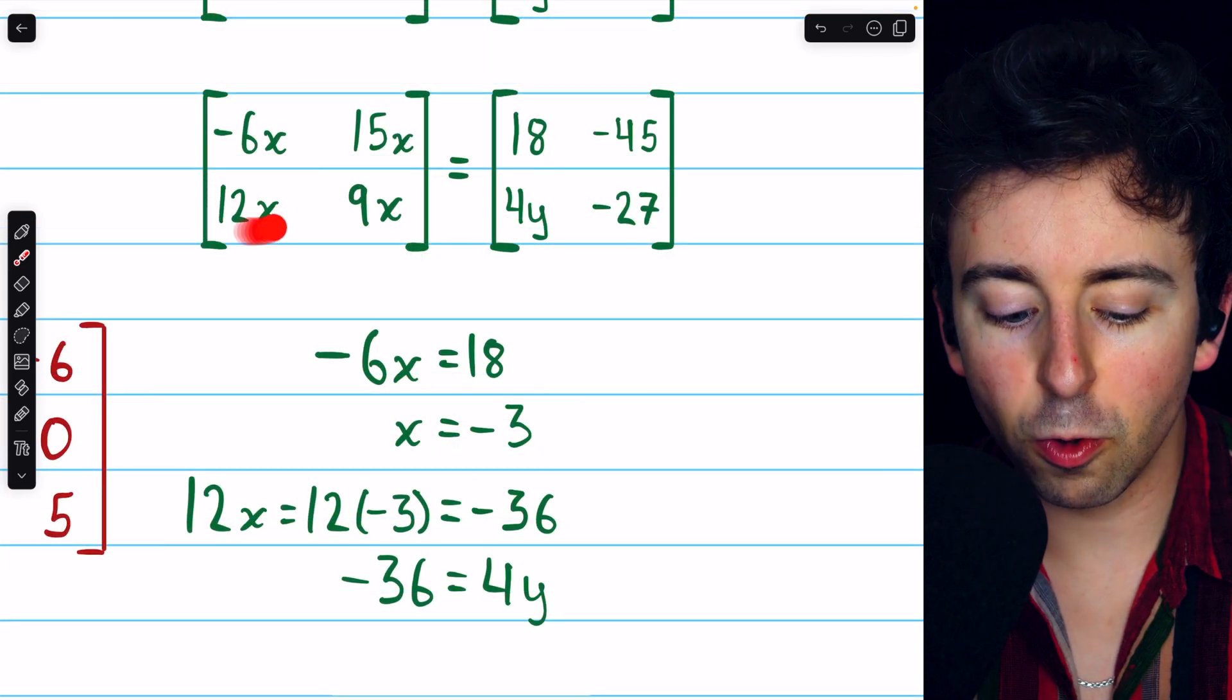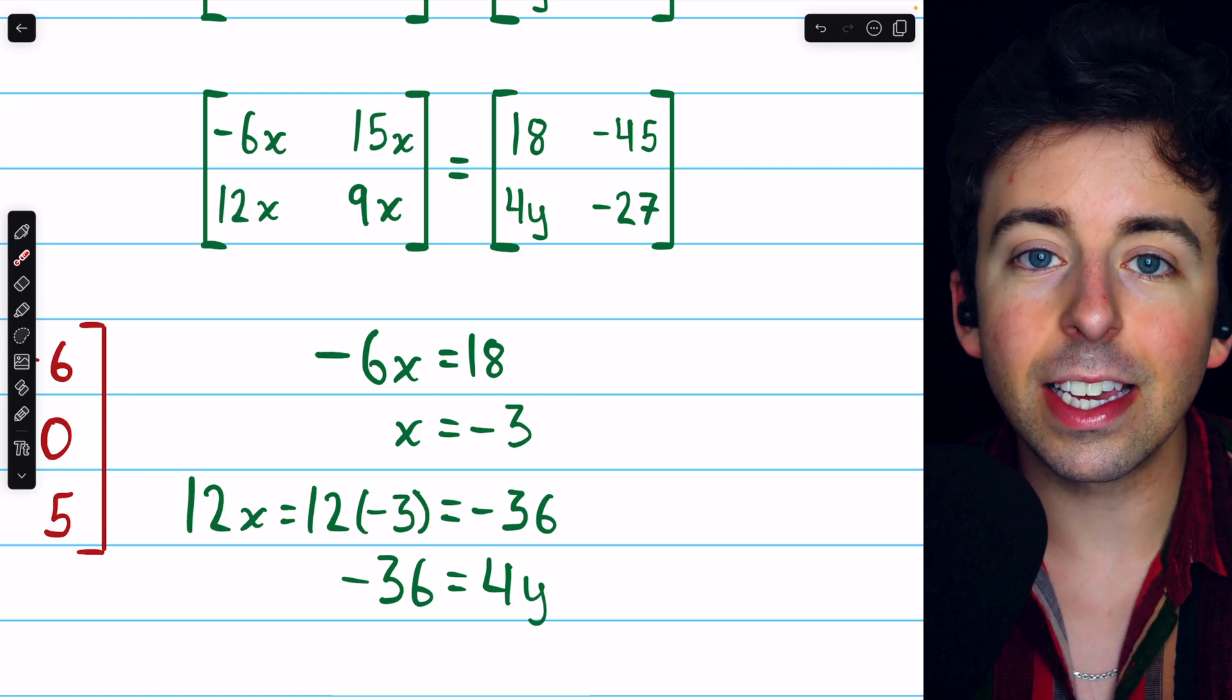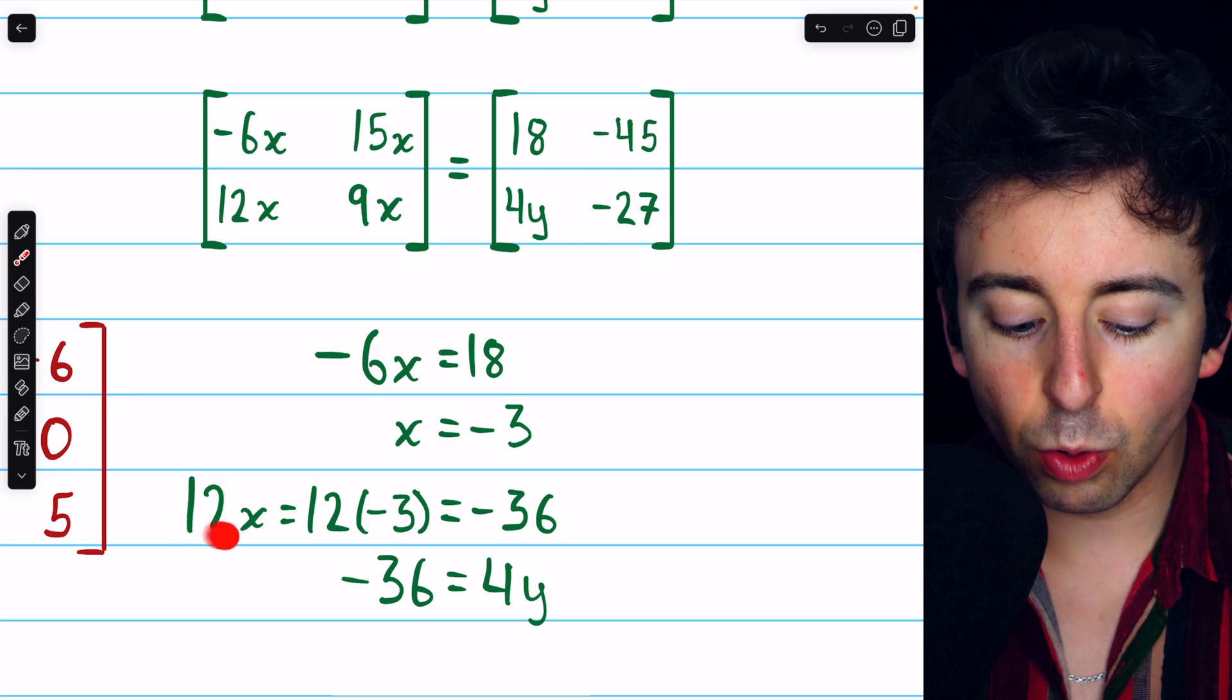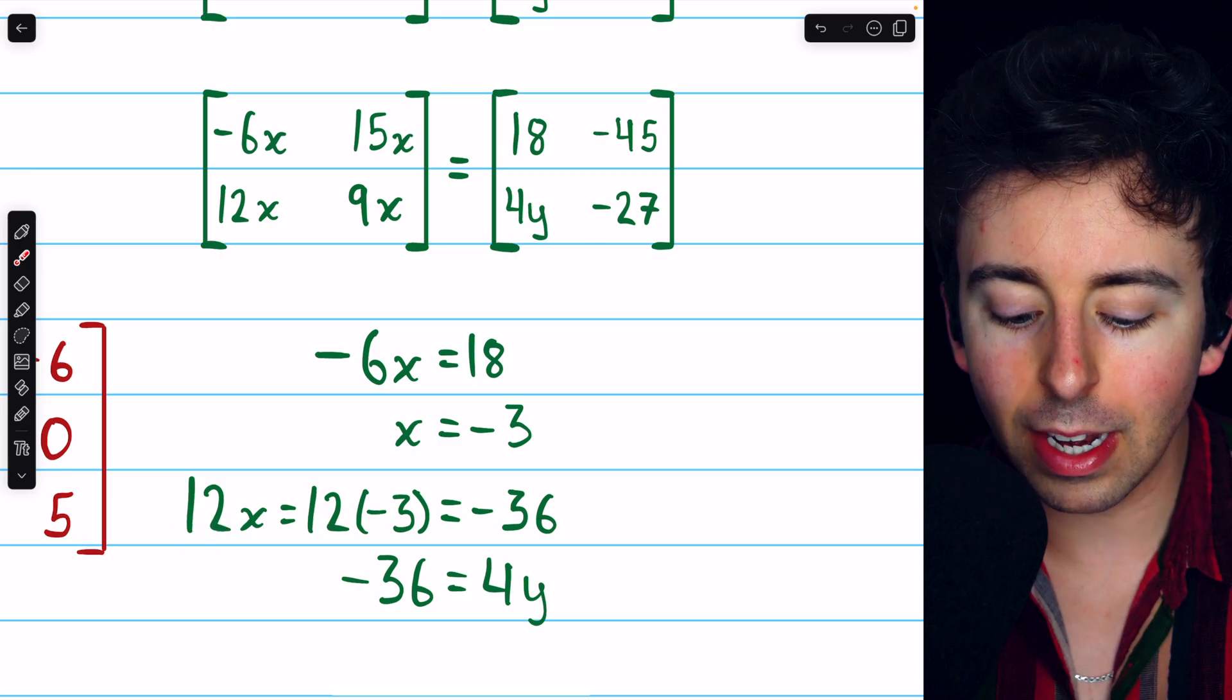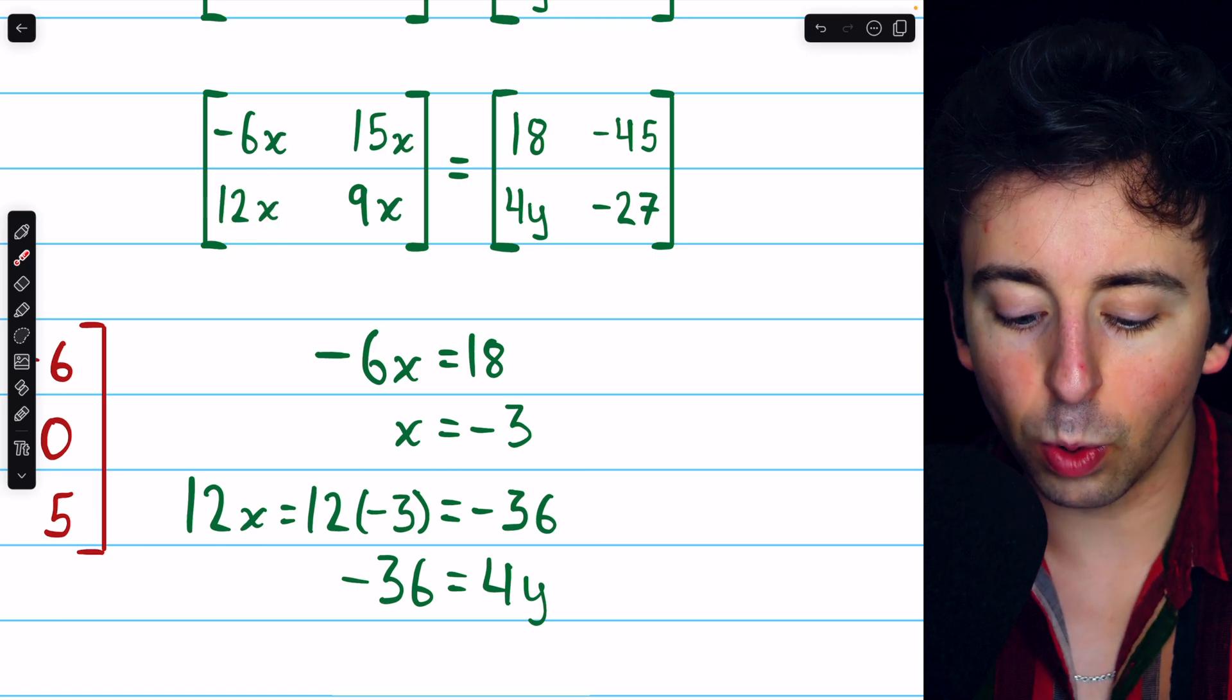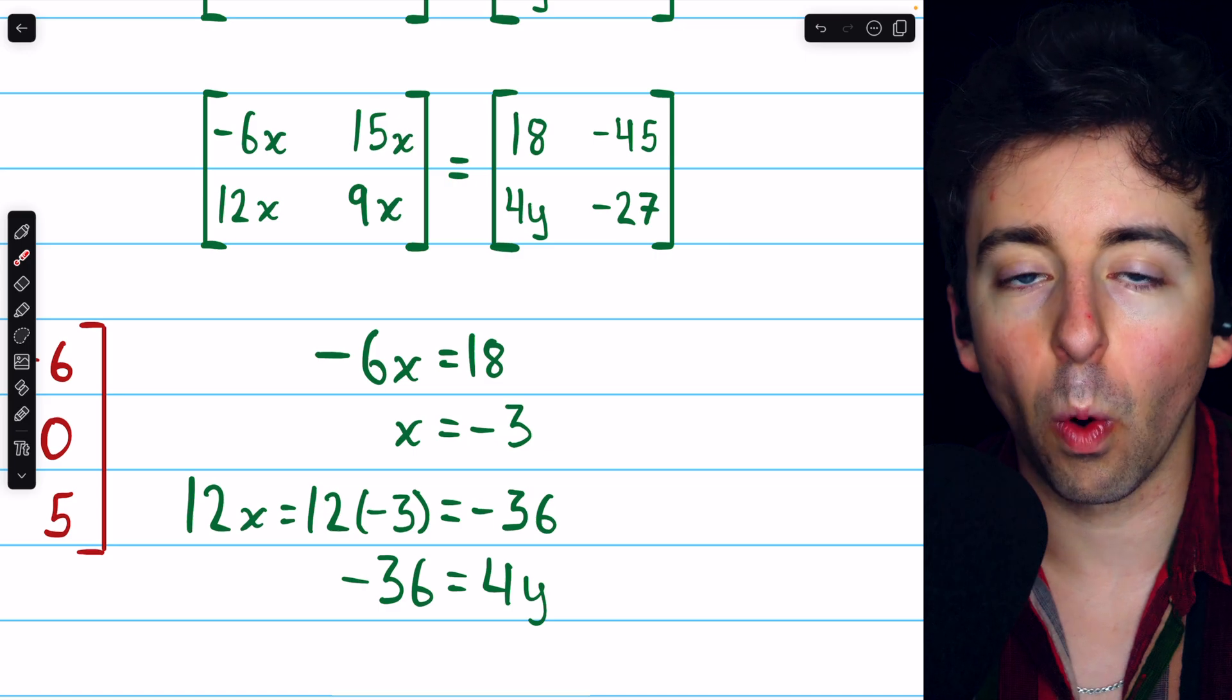So we know that this entry 12x must equal the corresponding entry 4y in the other matrix. But we know that x is negative 3. So 12x is 12 times negative 3, which is negative 36. So this entry is actually negative 36.